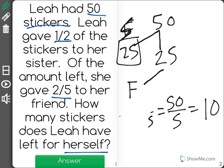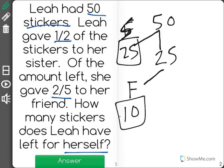So that means that her friend gets 10. Her friend gets 10 stickers, leaving the rest for Leah. Well, if she had 25, she gave 10 away. Leah has 15 stickers left for herself.